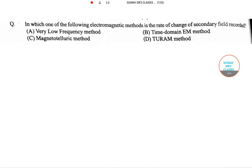So the first question says, in which of the following electromagnetic method is the rate of change of secondary field recorded? So let's see. So first is our very low frequency method.